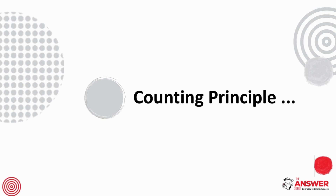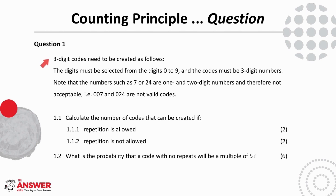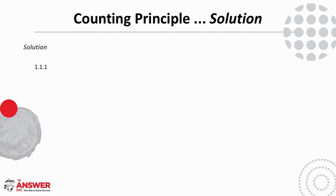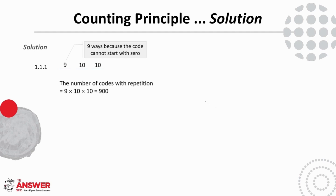On to questions on the counting principle. Question 1 is about three-digit codes. Note you're being asked for the number of codes and then for the probability. To find the number of three-digit codes, place three slots to represent each of the digits. For 1.1.1, where digits can be repeated, because zero is one of the digits and the code cannot begin with a zero, this leaves nine options for the first slot. The second and third slots can each be any of the ten digits, so the number of codes with repetition is 9 times 10 times 10, which equals 900.